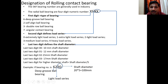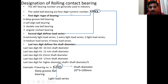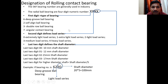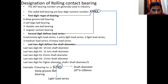Now coming to the second digit of the 4-digit bearing number — used for radial ball bearings. The second digit defines the load capacity, or the type of loading the bearing can sustain. If the second digit is 0, the bearing will be used for extremely light load — that is, where very, very small loads are present on the bearing.